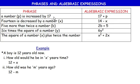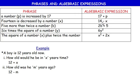Statement two: 14 is decreased by a number x — that gives 14 − x. If 14 is decreased by 3, the answer is 11: 14 − 3 = 11. The 14 comes first, then the number being subtracted comes second, with the subtraction sign in between.